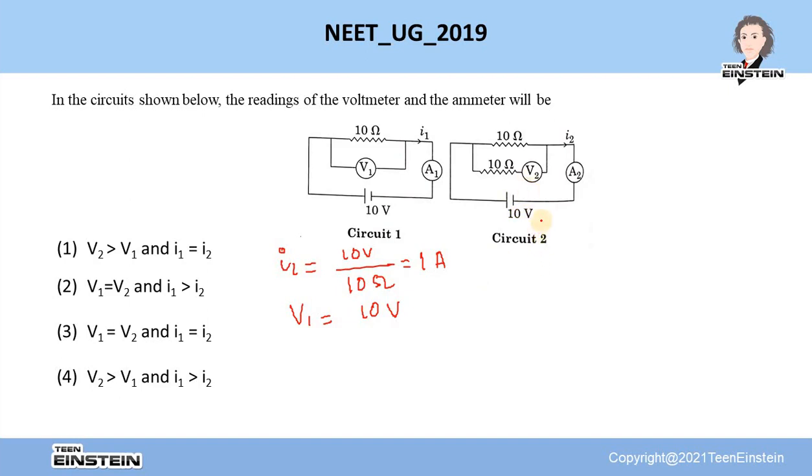Now look at this second circuit. In this circuit, the only additional thing is this 10 ohm resistance. Compared to the circuit 1, the additional thing is this 10 ohm resistance which is connected with the voltmeter.